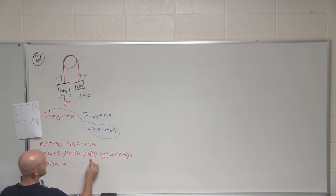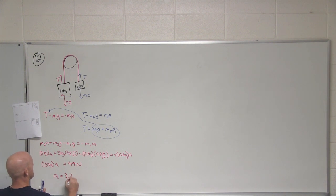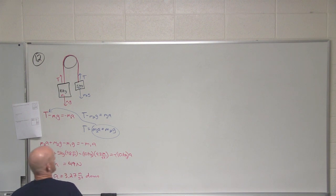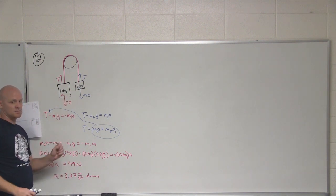So M2 is 5 kilograms times a plus 5 kilograms times 9.8 minus M1 now, 10 kilograms times 9.8 equals negative 10 kilograms times a. So we've got a showing up in both of these terms here. So I'm going to isolate that over here. We're going to have 15 kilograms times a. And I'm going to move everything else over to the other side here. In this case, let's reduce this down a little bit. So 9.8 times 10 is 98. 5 times 9.8 is 49. This becomes positive when I move over this negative. And this is going to equal 49 newtons. And so acceleration is 49 newtons over 15 kilograms. 3.27 meters per second squared. And in this case, for the 10-kilogram object, that points down.